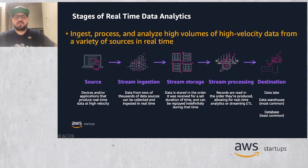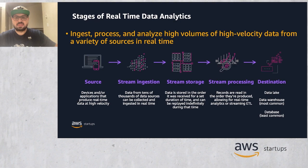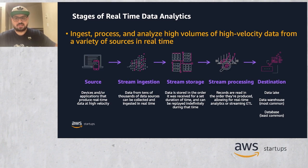Real-time data analytics consists of different stages to move the streaming data from sources to destinations. Sources are different applications, system components, and devices which generate high-velocity data. Stream ingestion is the collection and ingestion of data from various sources in real-time. Stream storage is the persistence of data in the order it is received for a set duration. Within this period, the data can be replayed as many times as desired. Stream processing is applying real-time analytics or streaming ETL to the records which are read from the stream storage. Destinations are the storage for processed data — most commonly data lakes and data warehouses, though databases are also possible.